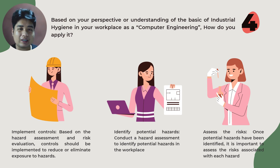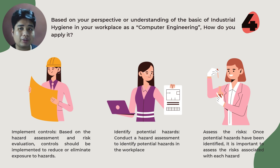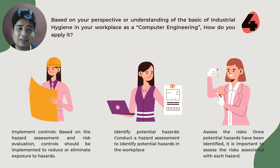Let's dive into some key steps in applying industrial hygiene in our workplace. Number one: based on hazard assessment and risk evaluation, controls should be implemented to reduce or eliminate exposure to hazards. For example, implementing proper grounding procedures, ensuring ergonomic workstation setup, and providing appropriate ventilation and PPE for handling hazardous chemicals. Controls may include engineering controls, administrative controls, or PPE, depending on the nature of the hazard. Number two: conduct a thorough hazard assessment to identify potential hazards. As computer engineers, we may encounter electrical hazards, ergonomic hazards from improper workstation setup, and potential exposure to hazardous chemicals during equipment maintenance.